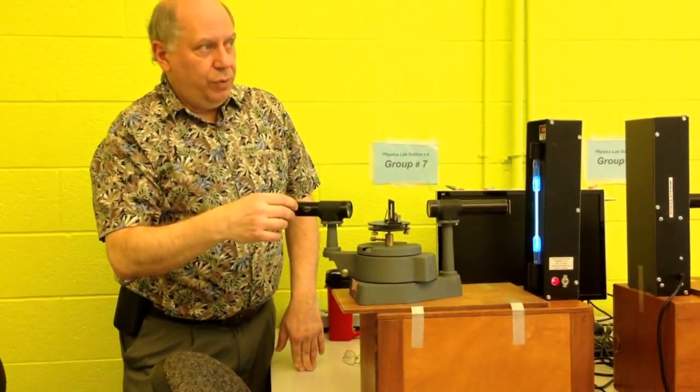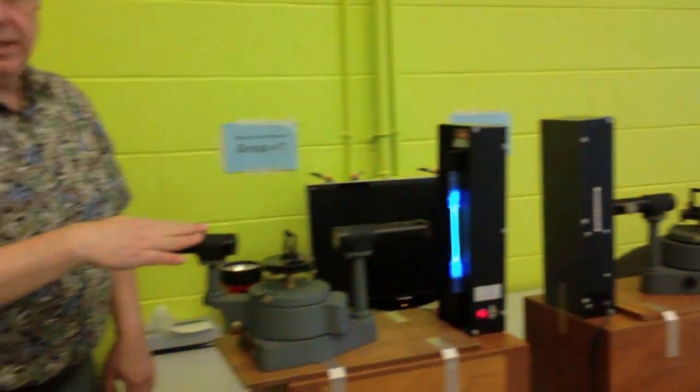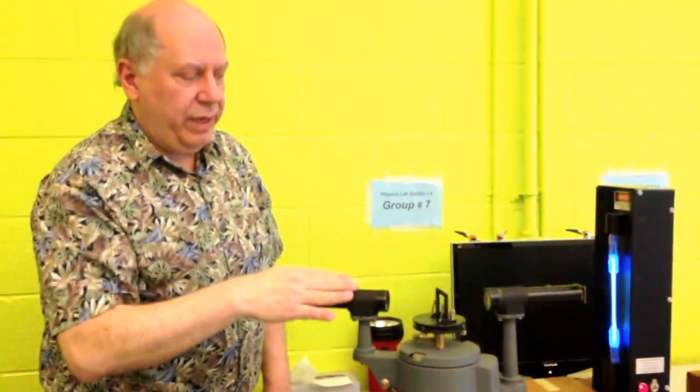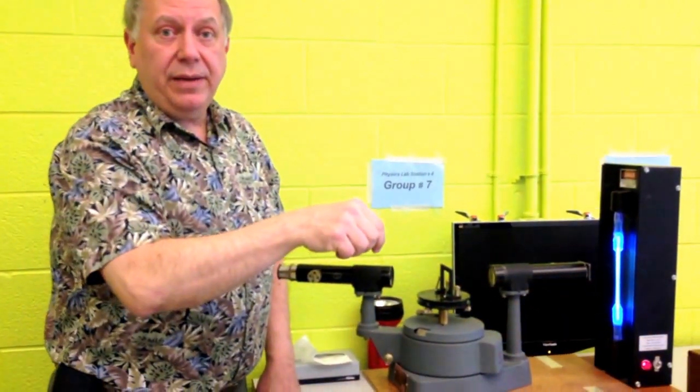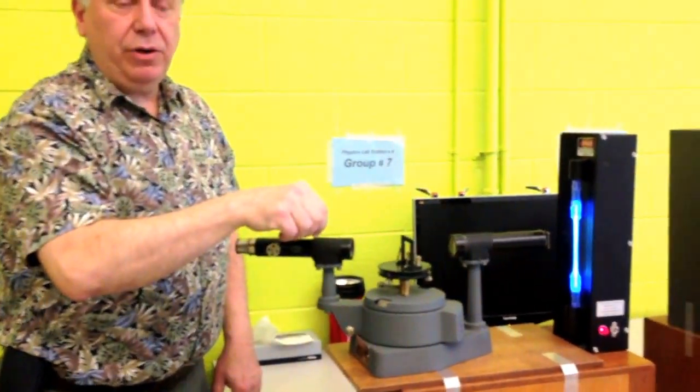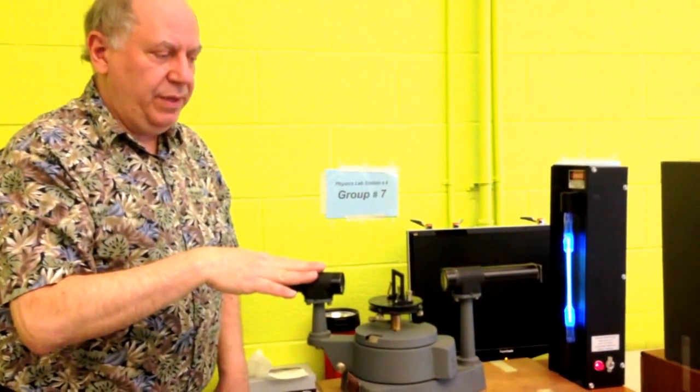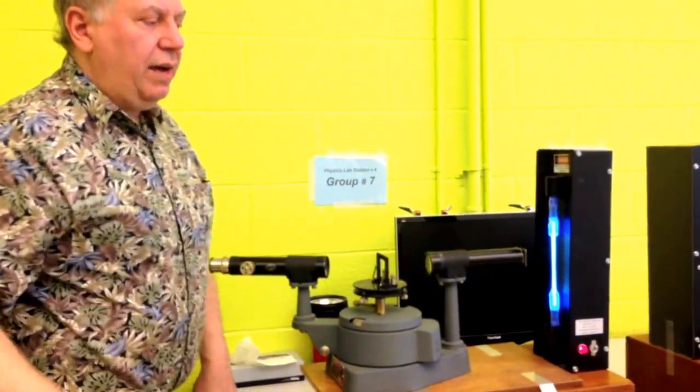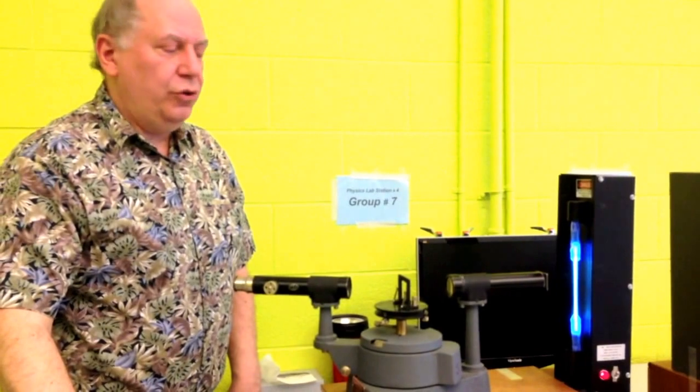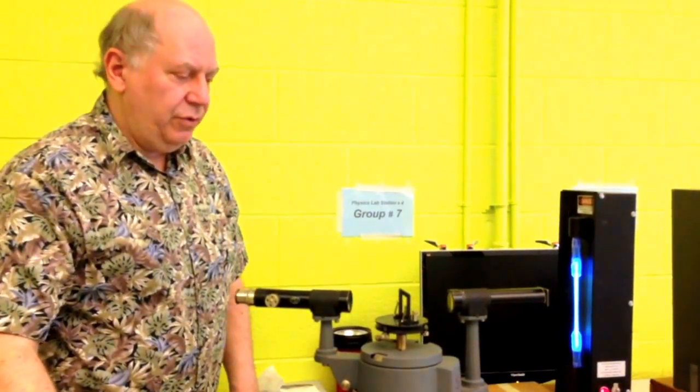Focus the telescope at something very far away. So once you have focused this telescope at something that's very far away, the light rays from that object will be coming in parallel. So your telescope now is preset to accept parallel light rays. Then you now have to focus the collimator tube to produce parallel light rays. And how do you do that?